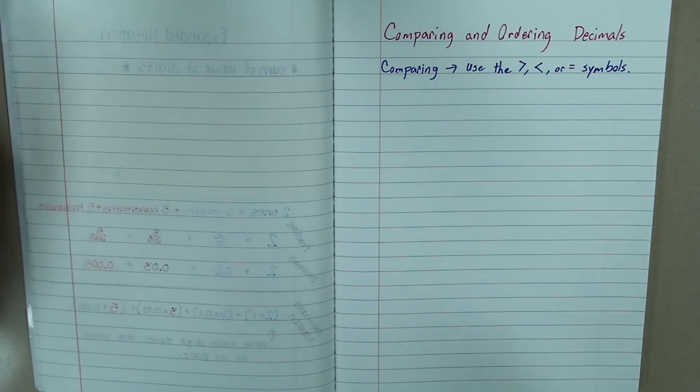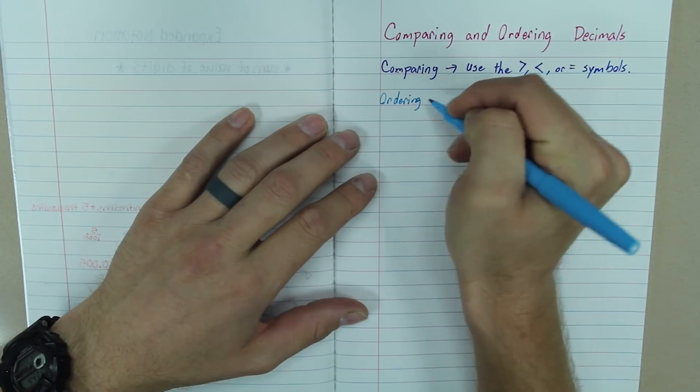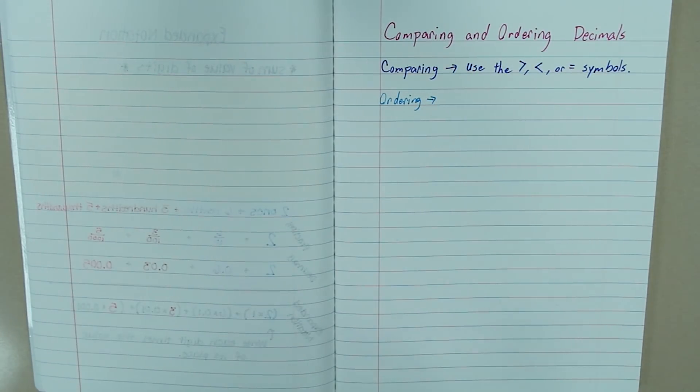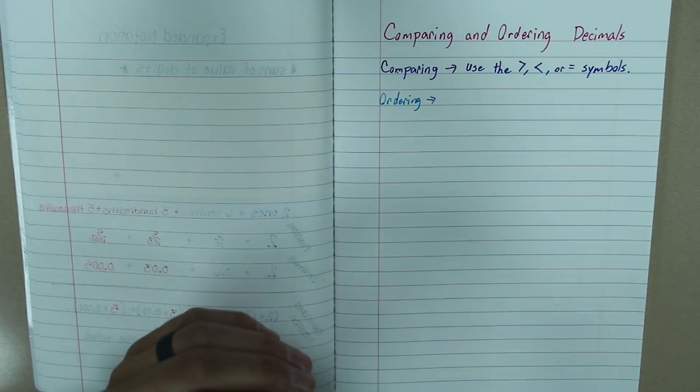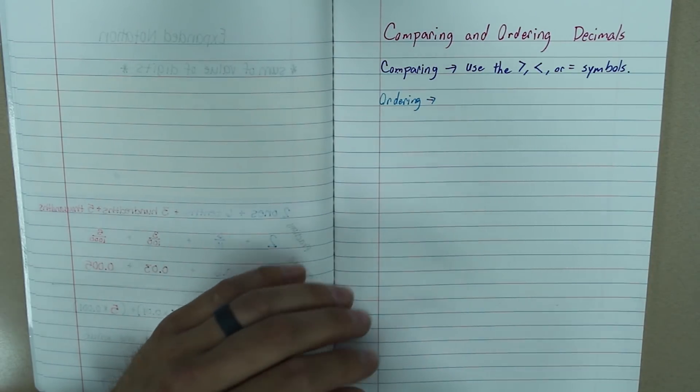And ordering, sorry my handwriting is sloppy. You are going to place the numbers in order from least to greatest, or greatest to least.